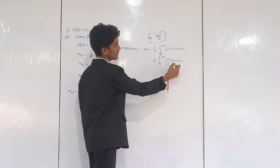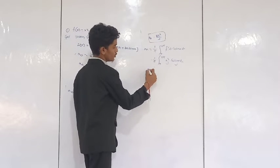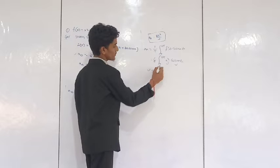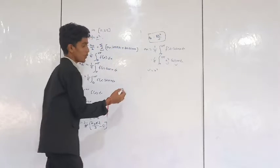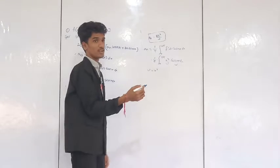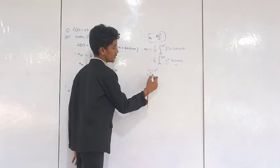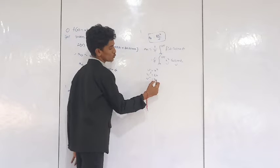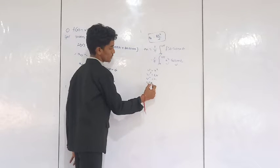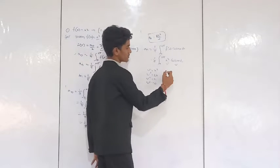This is u and this is v. U equals x², then the derivative of x² is 2x, and the double derivative of 2x is 2, then zero. V is cos(nx).